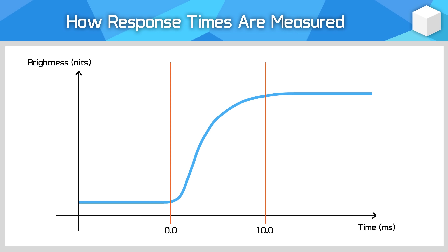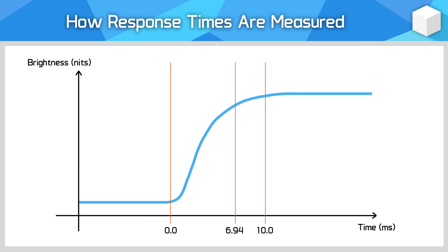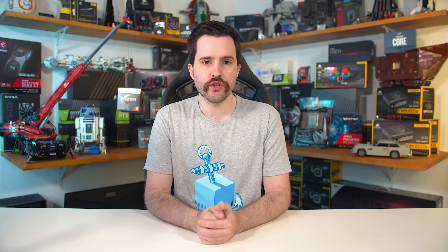Refresh blending is also a byproduct of slow response times. Blending occurs when a monitor is asked to change the frame it is displaying before it is finished updating the previous frame. As an example, if the transition time is 10 milliseconds but we have a 144Hz display, at its fastest the display may be asked to change its image every 6.94 milliseconds. So at 6.94 milliseconds it's asked to change and show something else, even before it's finished showing the original image, creating an effect where one frame blends into the next.